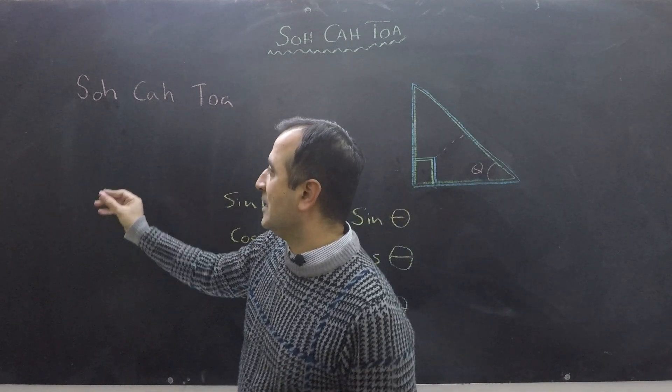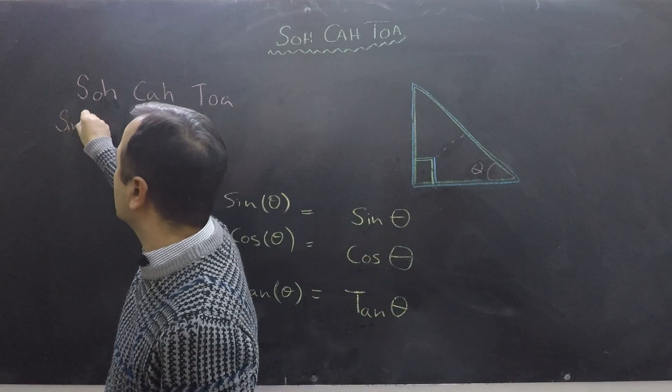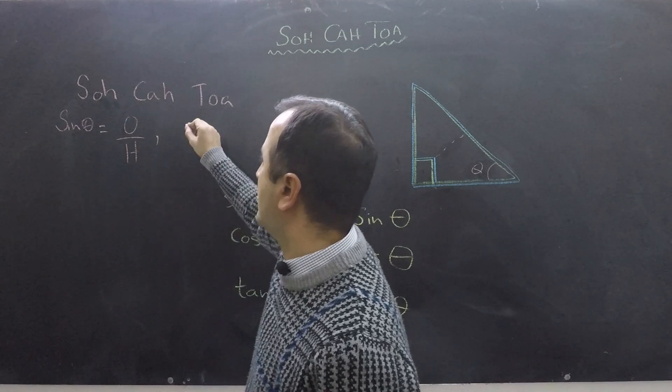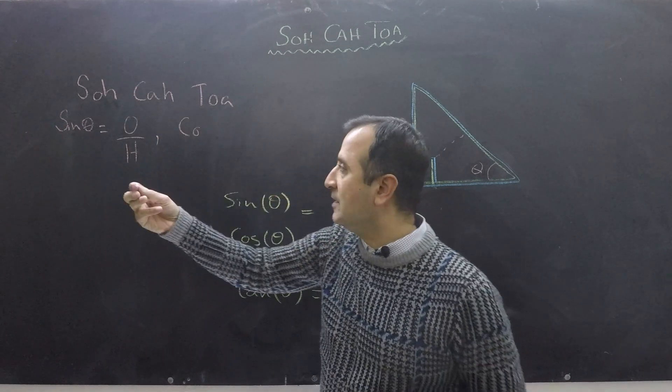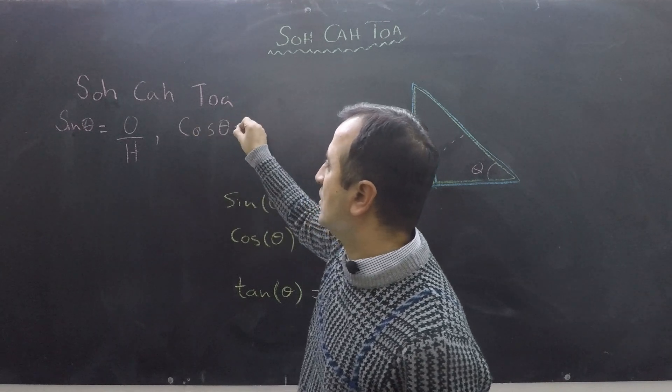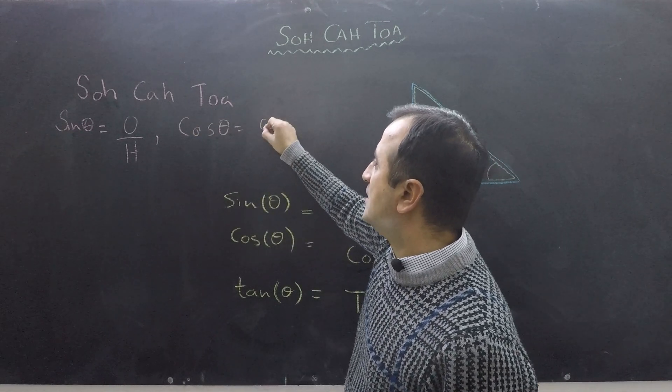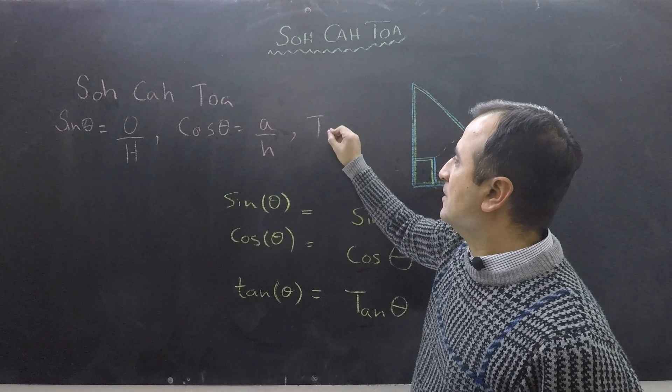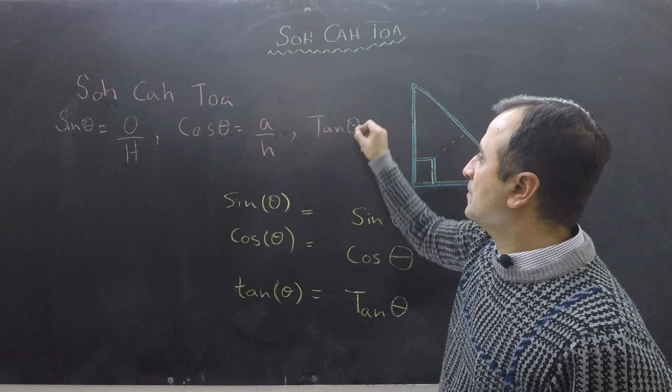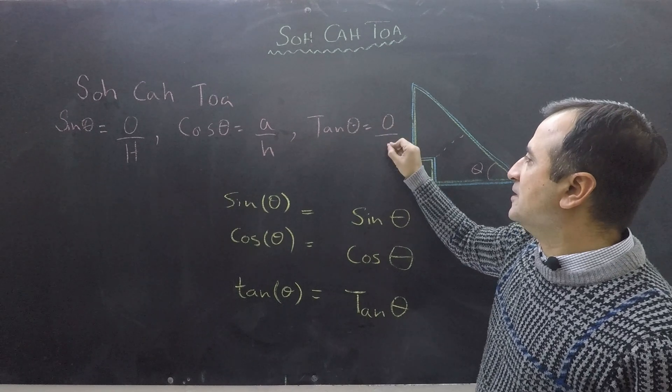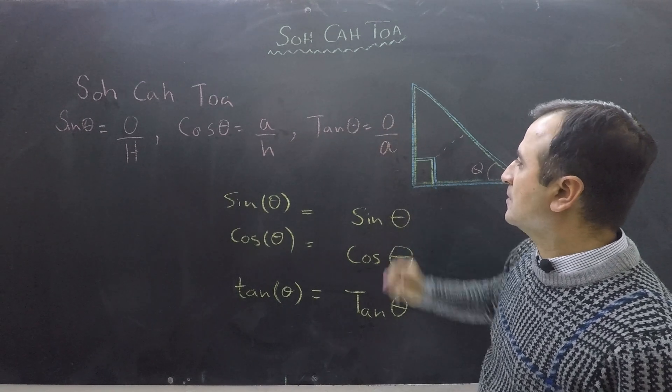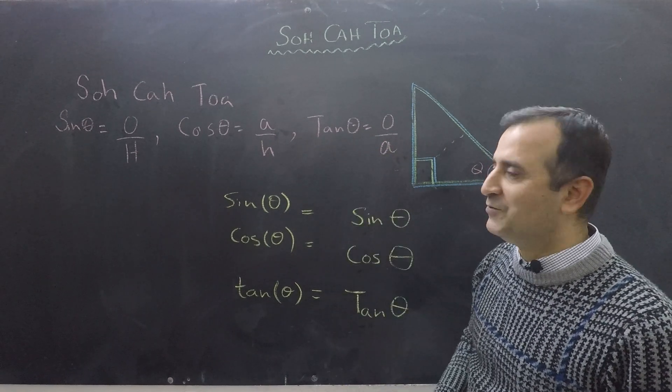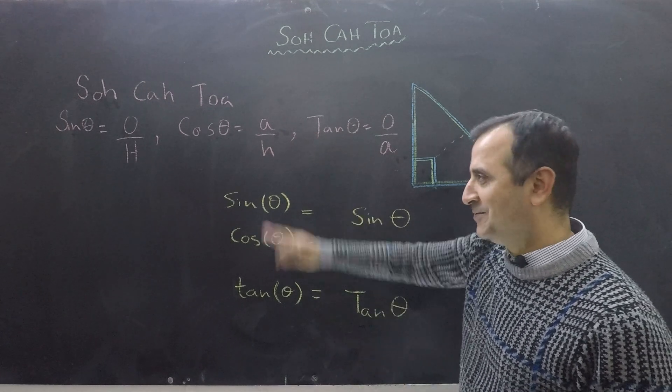So this is saying basically that sine theta equals opposite divided by hypotenuse. Maybe I should have used all capital or all smaller letters, but I think making people confused is better. So this way is good.